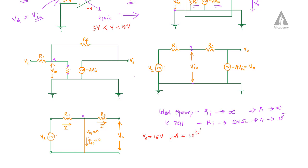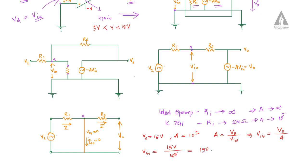For the IC741 amplifier, the gain is on the order of 10 raised to 5, and A equals V0 divided by V_in. From this equation, we get V_in equals V0 divided by A. Now calculating V_in: V_in equals V0, which is 15 volts, divided by 10 raised to 5. We get 150 microvolts.